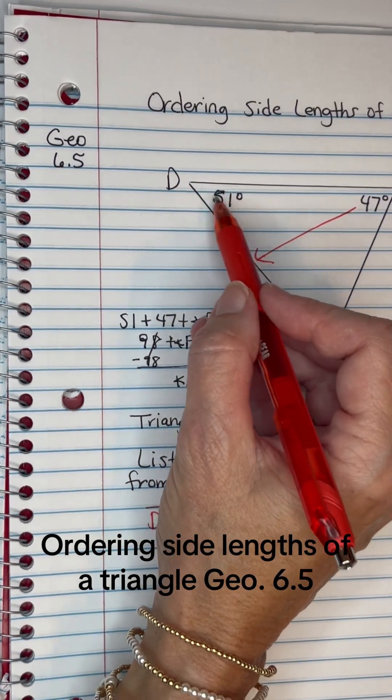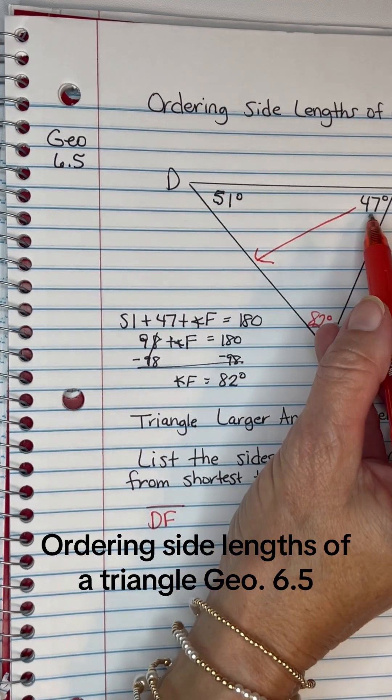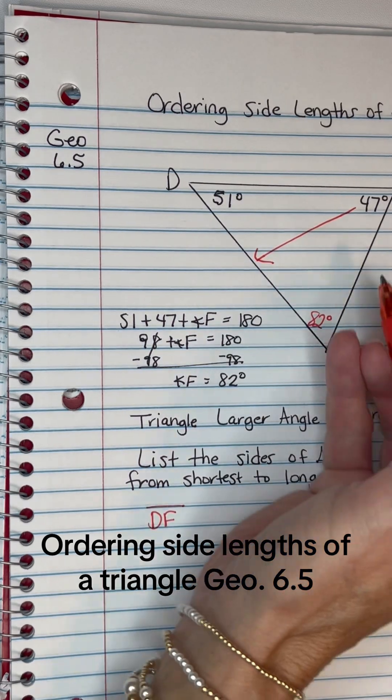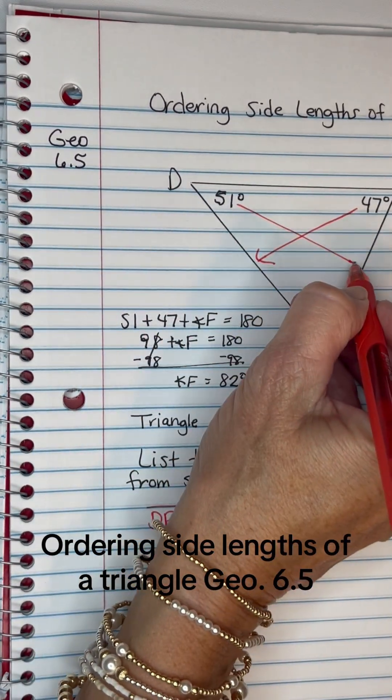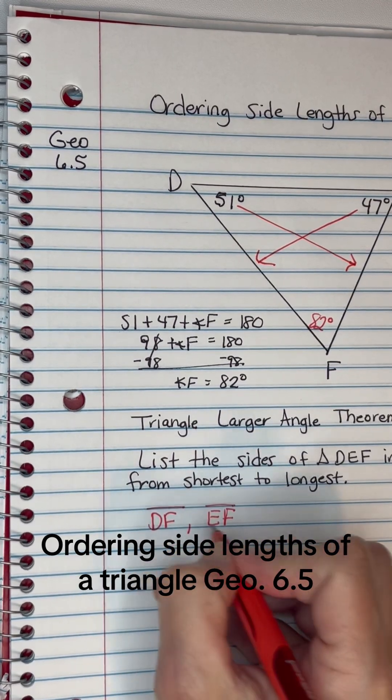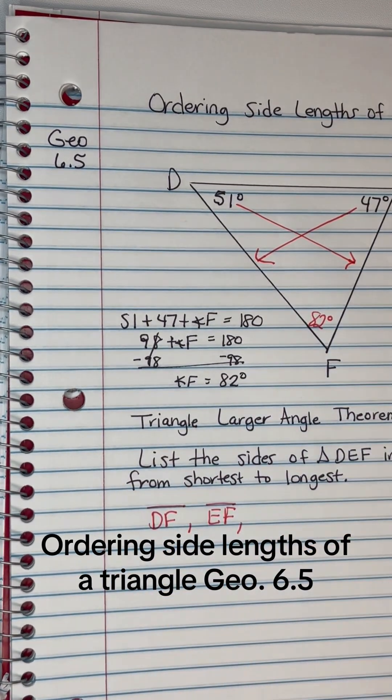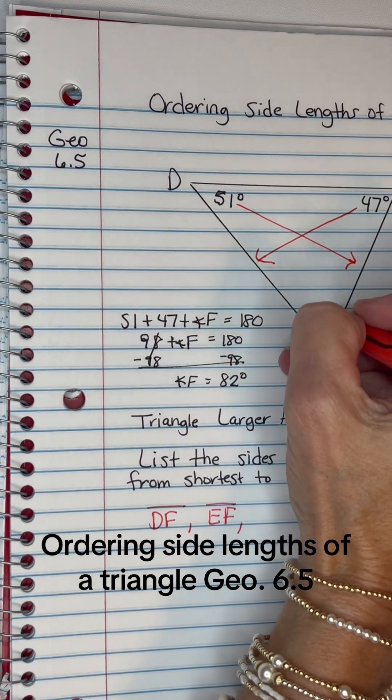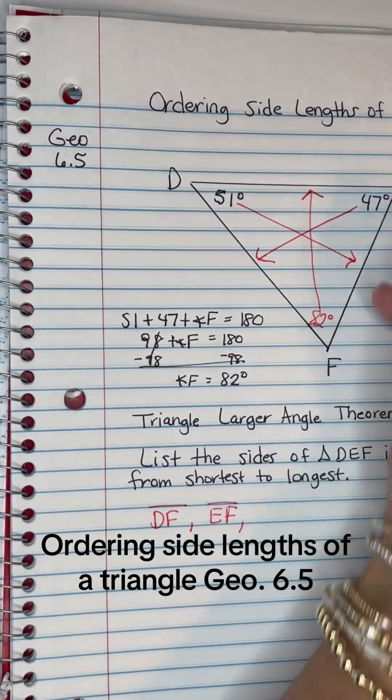Now 51 is the next size angle, 47, then 51, then 82, and 51 degrees is opposite this leg EF. So it's the next in length, and then my biggest angle is 82, and it's opposite this leg DE.